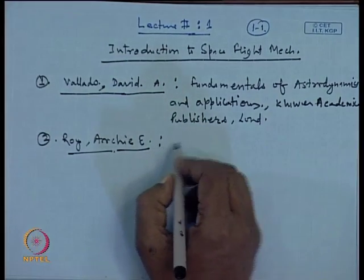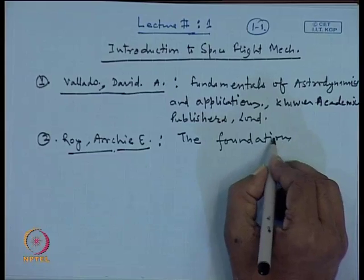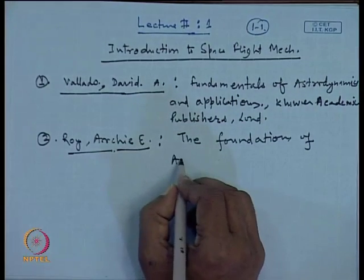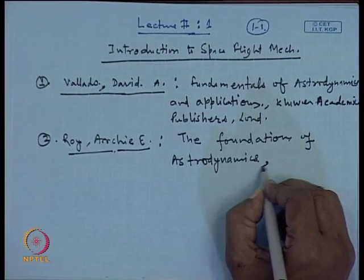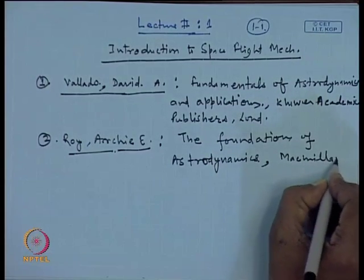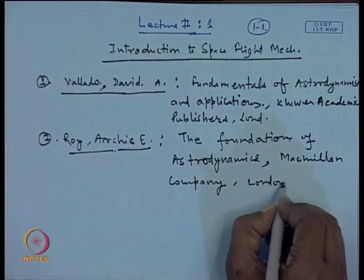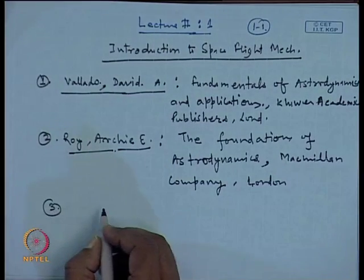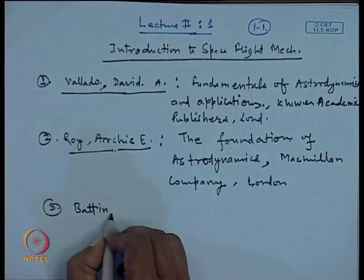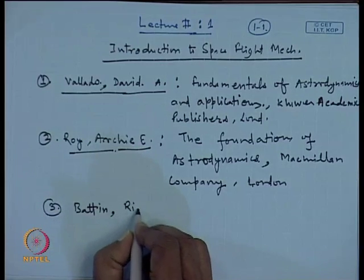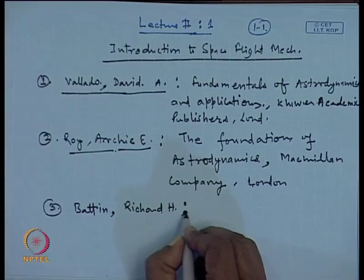Another reference is by Archie Roy, on the 'Foundations of Astrodynamics,' from Macmillan Company. Then a very good book — in fact, I will say this is the bible for astrodynamics or space dynamics mathematics — this is by Richard H. Battin, and it comprehensively describes the mathematics for astrodynamics.